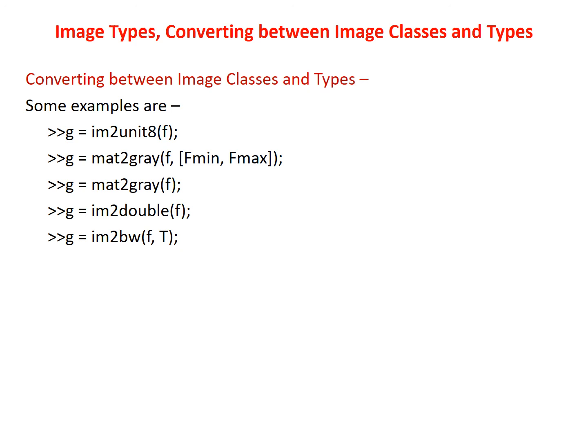The function im2double converts an input to class double. If the input is of class uint8, uint16, or logical, im2double converts it to class double with values in the range 0 to 1. Lastly, the function im2bw, with syntax g = im2bw(f, T), produces a binary image g from an intensity image f by thresholding. The output binary image g has value 0 for all pixels with intensity less than threshold T, and value 1 for all other pixels.